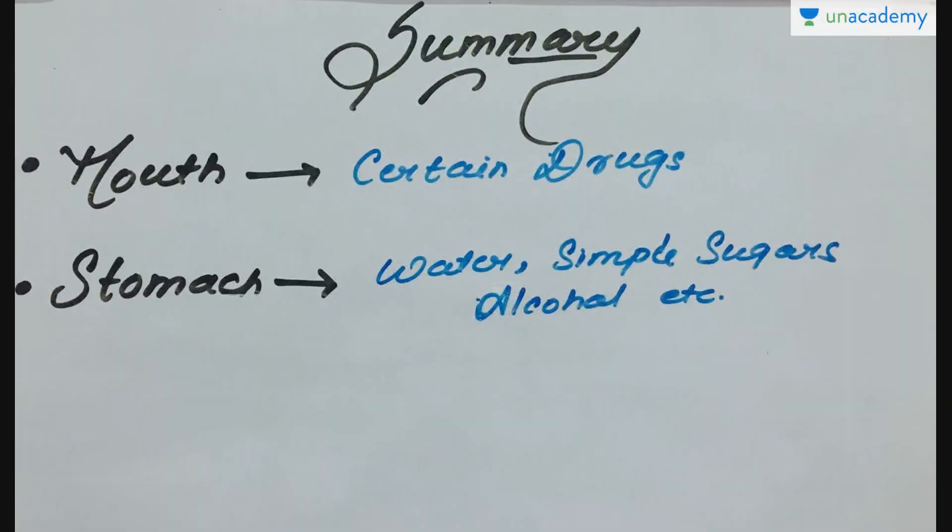Now let's summarize. Absorption of substances takes place in different parts of the alimentary canal — the mouth, stomach, small intestine, and large intestine — however, maximum absorption occurs in the small intestine. Here is the summary of absorption in different parts of the digestive system.